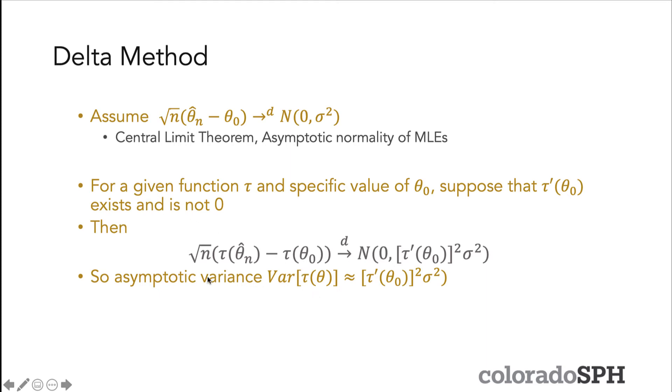I have that written out as the asymptotic variance. I say the variance of τ(θ) is approximately equal to this quantity rather than directly equal because this is an asymptotic variance. That equality only holds in the limit when n goes to infinity. Otherwise it approaches that value.